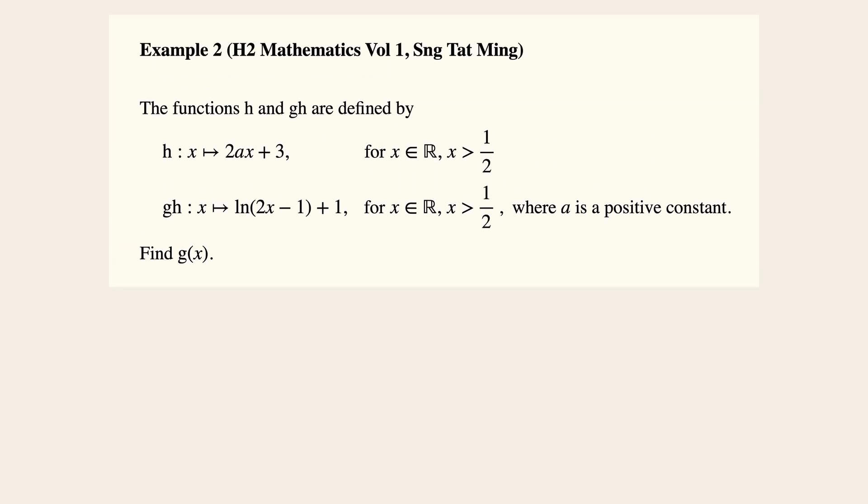Now moving on to example number two, the functions h and gh now are defined by as such 2x plus 3, while gh is ln 2x minus 1 plus 1. Now in this case, we are not able to substitute the function h into the composite function gh, because that will not give us the function gx, rather we will then have gh squared, which is not what we want. Therefore, we are going to employ another technique.